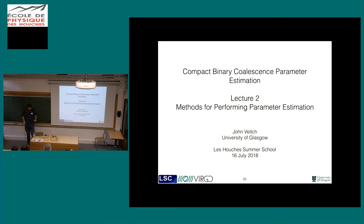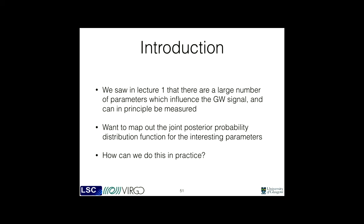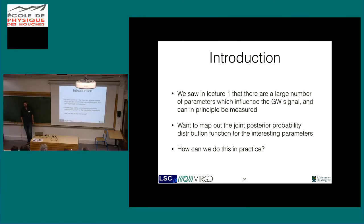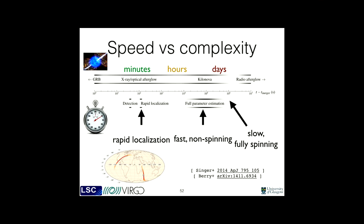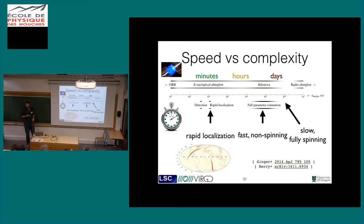We have one hour, which is probably enough. We've seen that there are a large number of parameters that actually determine the behaviour of the signal, and we want to know what is the posterior probability distribution on those parameters. That's the object we're trying to obtain in doing this analysis. How do we actually do this in practice? The first thing to appreciate is that there is a difference in how you would want to do this depending on what your actual desired result is - so there's a time scale involved.